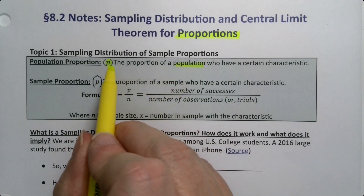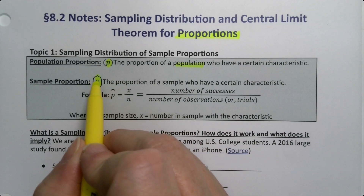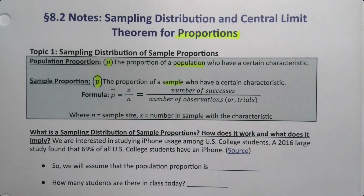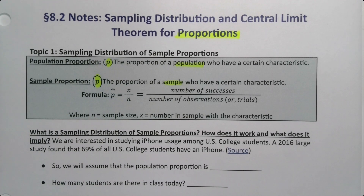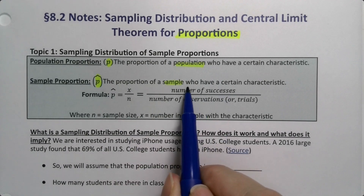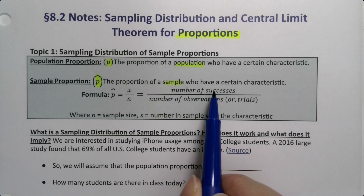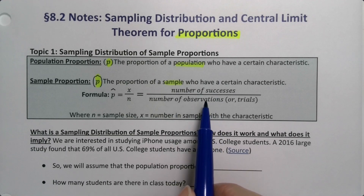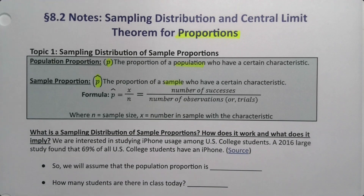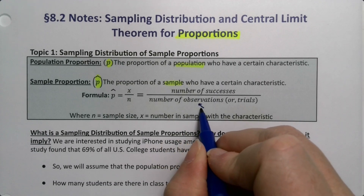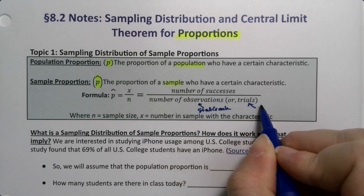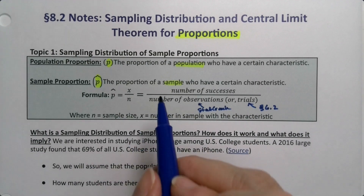The population proportion is P, and P-hat — with a little hat on his head — is the sample proportion. That symbol might look familiar: P and P-hat. We looked at this in section 6.2 on the binomial distribution, because this is very much related to the binomial distribution. P-hat is X over N, where X is the number of successes — that terminology from the binomial distribution — divided by N, the number of observations or trials. StatCrunch calls them observations; section 6.2 called them trials, but they mean the same thing.